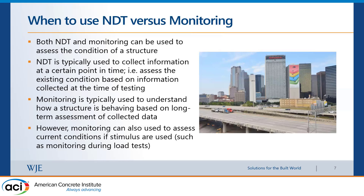For load testing — using ACI 318 Chapter 27 or ACI 437.2 code — you need instrumentation to collect deflections, calculate the acceptance criteria, and assess the structure's condition. Then you take the loads off and go home. So it's really similar to what NDT can do, but using a monitoring technique. Acoustic emission also has ASTM standards for FRP systems — again similar to what NDT can do, but it is a monitoring technique.